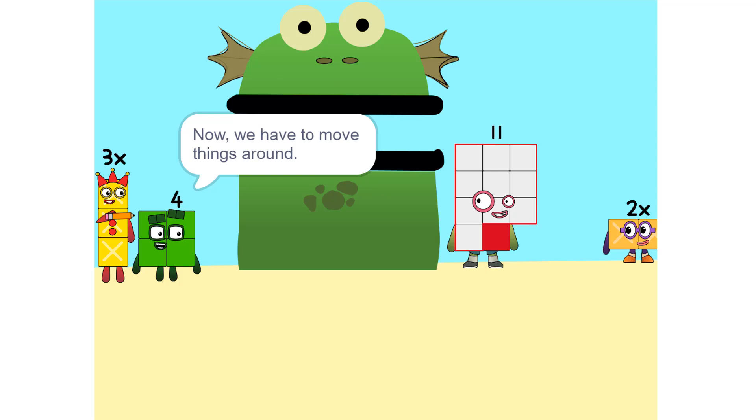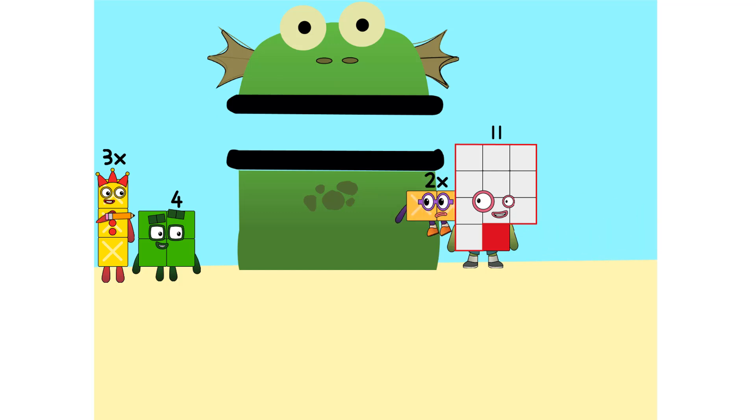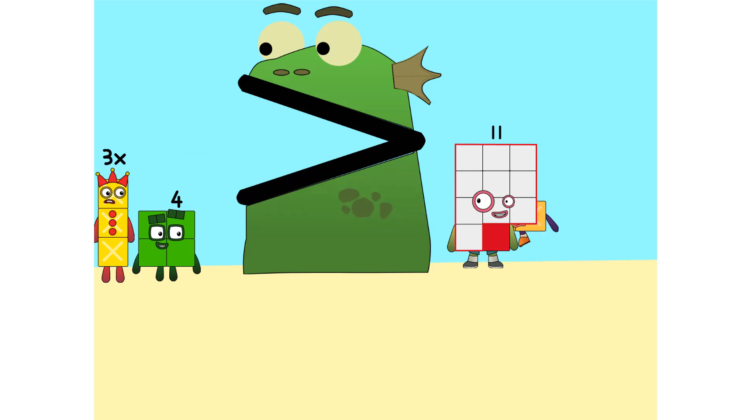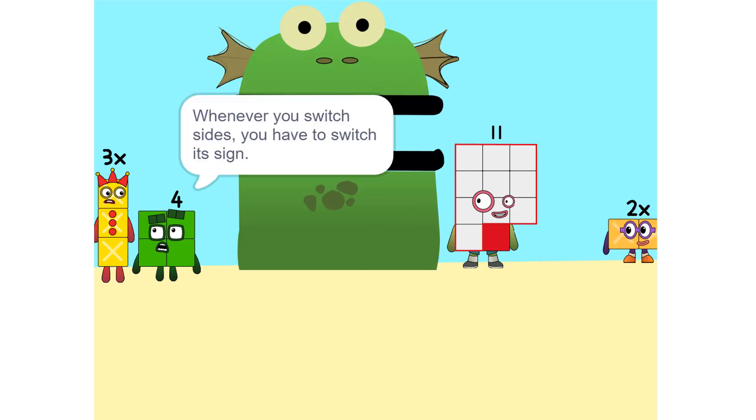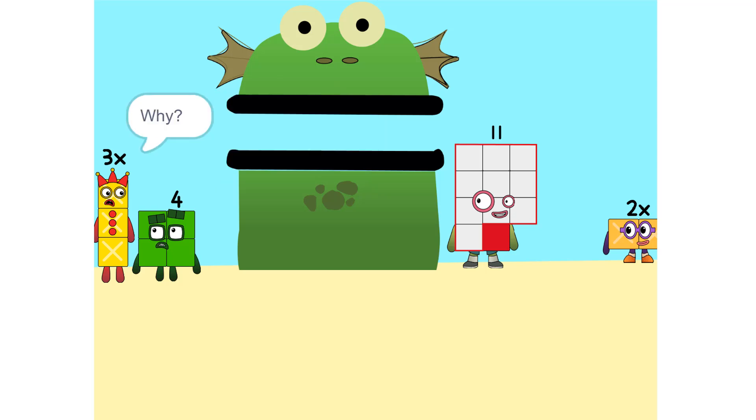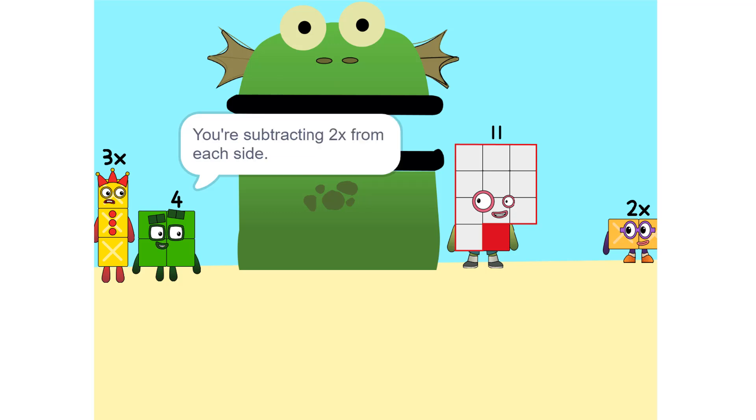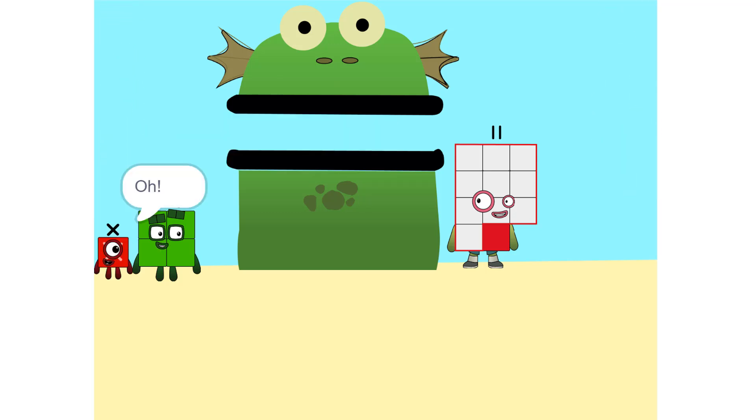Now we have to move things around. We have to move this 2X to this side. Whenever you switch sides, you have to switch its sign. So if it's positive, it becomes negative and vice versa. Why? Think of it this way: you're subtracting 2X from each side. Oh. So it'd just be 1X or X. Correct.